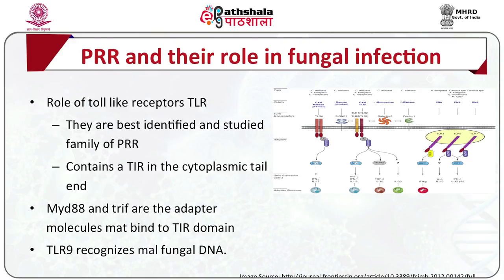Toll-like receptors (TLR) are considered the best identified and studied family of PRR and contain a TIR domain in the cytoplasmic tail. MyD88 and TRIF are adapter molecules that bind to the TIR domain. TLR are single membrane-spanning molecules that, upon binding to a target, become homo- or heterodimerized, leading to activation of MyD88 and TRIF pathways. Products capable of binding to TLR include lipoproteins, flagellins, glycolipids, double-stranded RNA, and bacterial lipopolysaccharide.